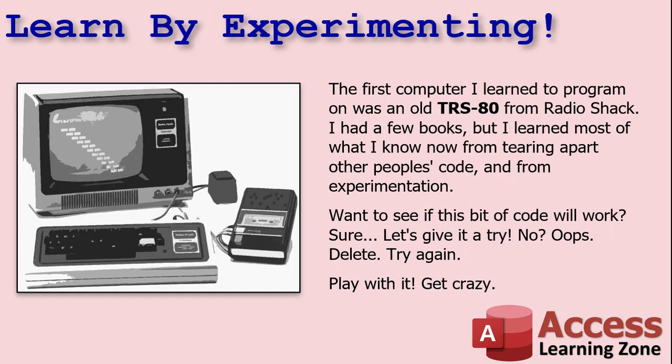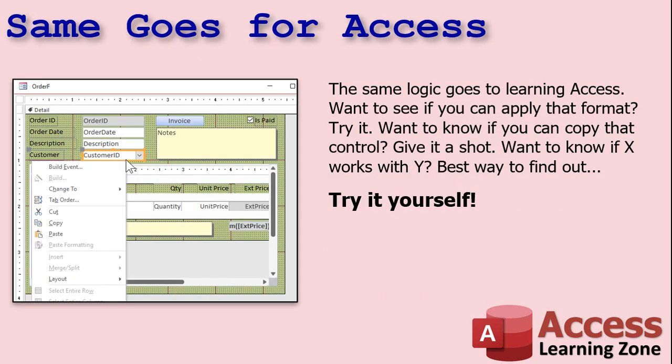The first computer I learned how to program on was an old TRS-80 from Radio Shack. They had one in my second grade classroom, and then I begged my grandparents to buy me a Color Computer 2 for Christmas that year. I had a couple of books, but I learned most of what I know from tearing apart other people's code and from experimentation. Want to see if a bit of code will work? Give it a try. No? Oops — delete it, try again, play with it, get crazy. The same goes for learning Microsoft Access or pretty much anything else.